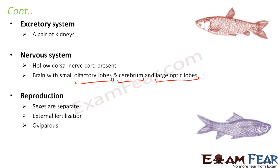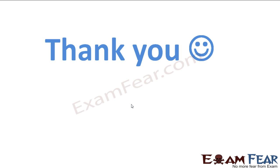Reproduction in Osteichthyes is sexual with separate sexes and external fertilization — the gametes are released together outside the body. They are oviparous, meaning they lay eggs and do not directly give birth to young ones.